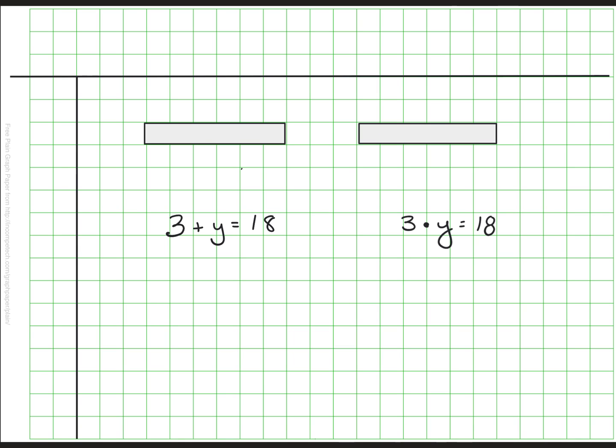Let's see if we can use what we know to draw these two equations in our tape diagram. So I have one for each of them. Let's start by doing 3+y=18 on the left. And think about how you might break that down. Does yours look something like this? I have two sections. I have three and I have y. And when I add them together, it's a total of 18.